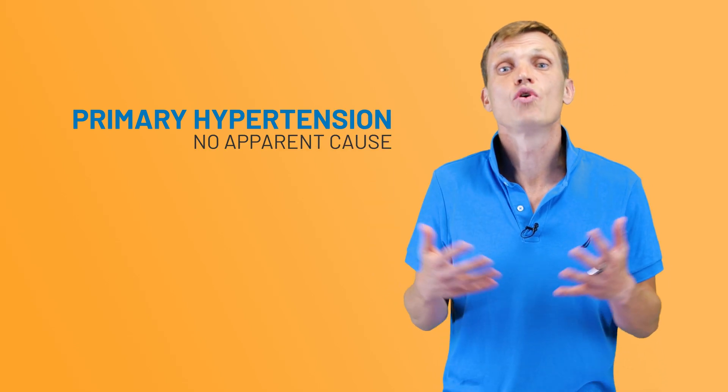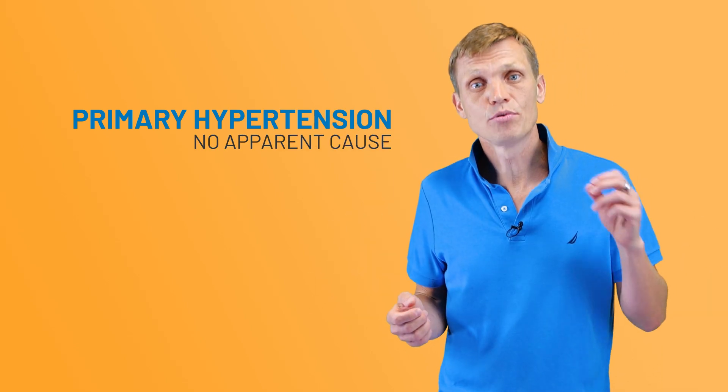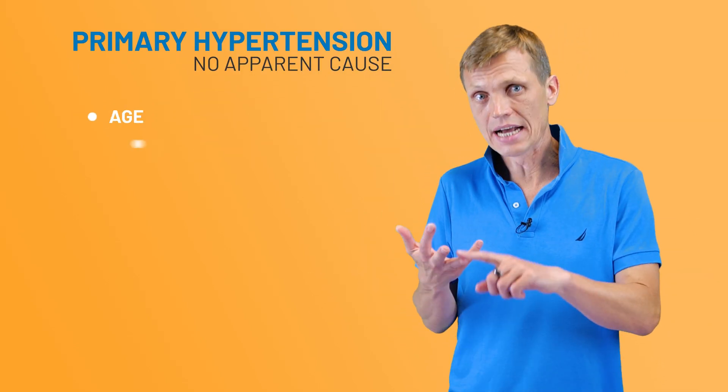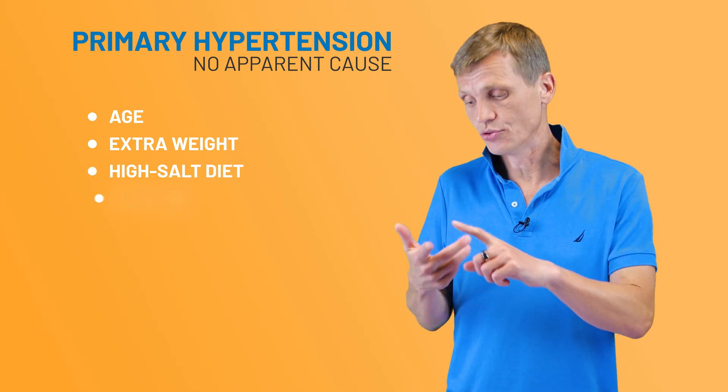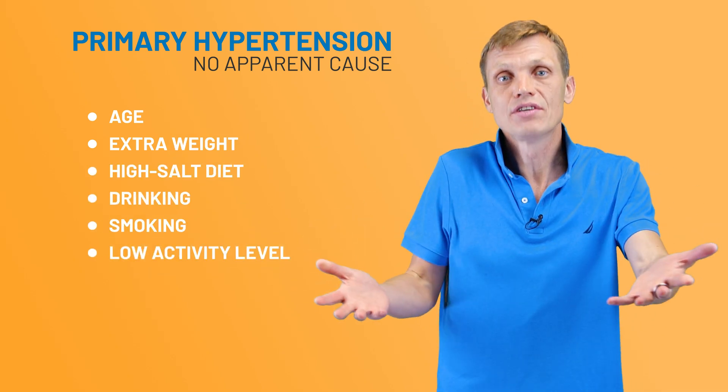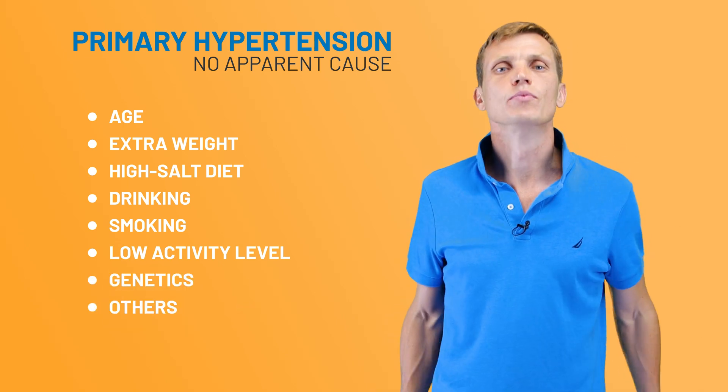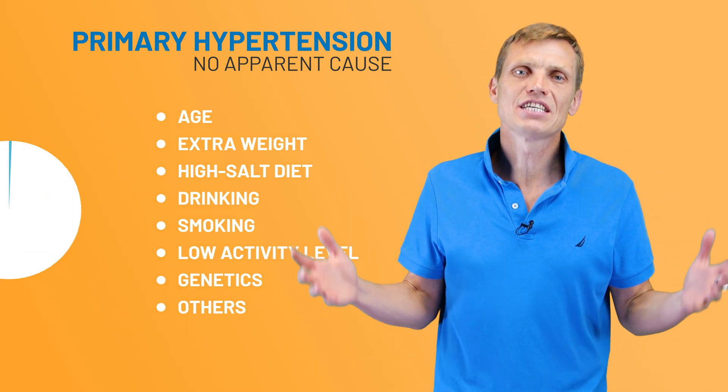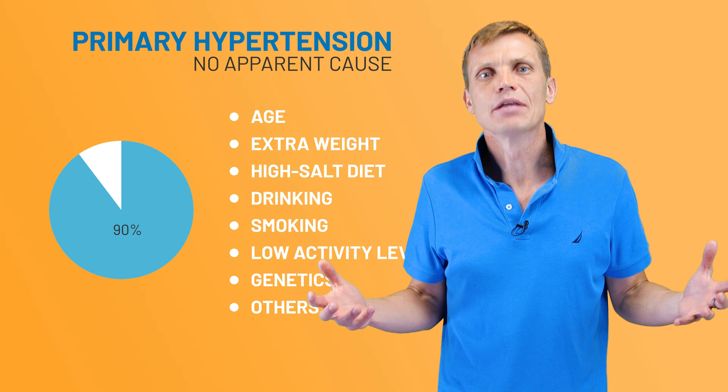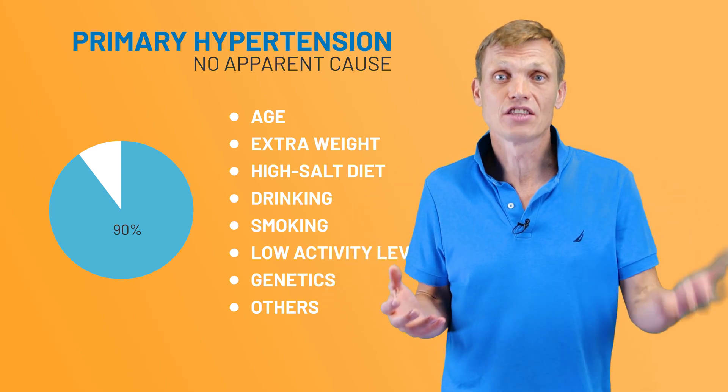So let's talk about what causes high blood pressure and how we can fix it. Primary hypertension, which has no apparent cause, has several contributing factors such as age, extra weight, high salt diet, drinking, smoking, low activity level, and many others, including genetics. We don't know them all. About 90% of all hypertension cases can be attributed to some combination of the factors on this list.